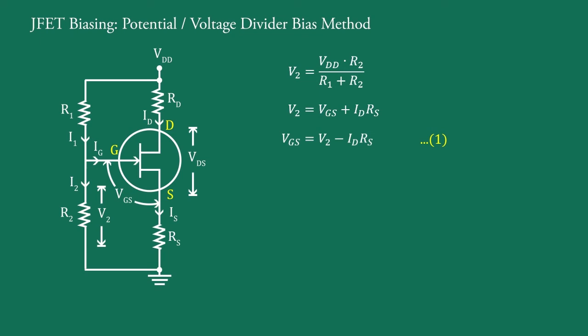Drain current is found from equation 1, that is making ID subject of the formula. That is ID equal to V2 minus VGS upon RS.